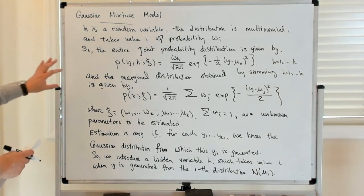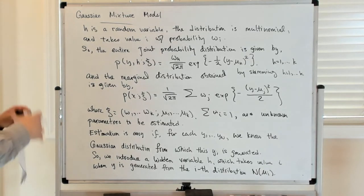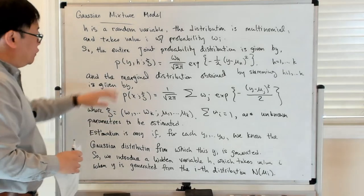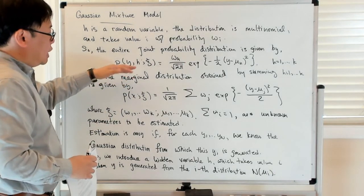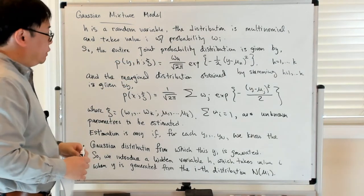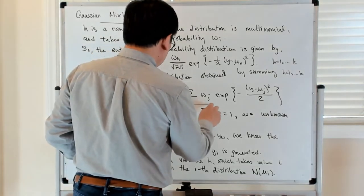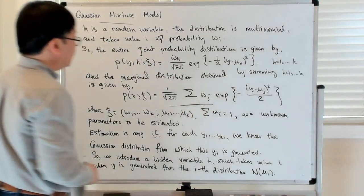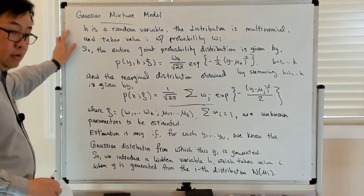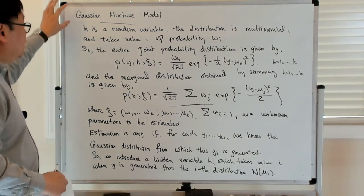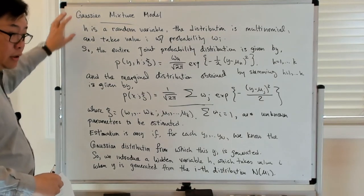So that's an interesting way of thinking about the estimation problem and the Gaussian mixture problem and embedding it into a bigger problem where you view this now as having an additional hidden variable. So that's one example of how a hidden variable formulation arises when you're considering the Gaussian mixture model.